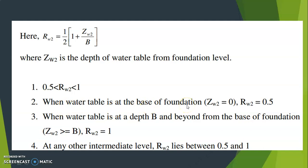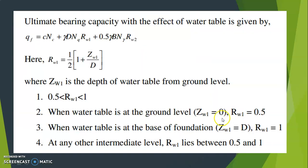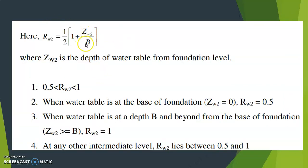R_w2 also lies between 0.5 and 1. When the water table is at the base of the foundation, z_w2 = 0, so R_w2 = (1/2)(1 + 0) = 0.5. When the water table is at a depth of B or beyond below the base of the foundation (z_w2 ≥ B), R_w2 = 1. At any other intermediate level, R_w2 lies between 0.5 and 1.